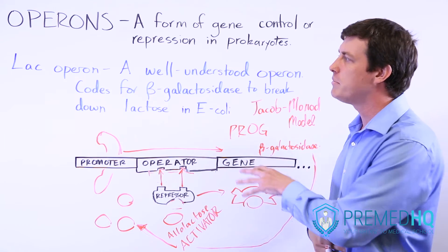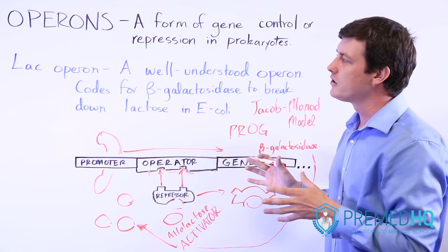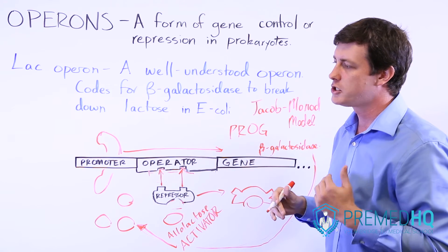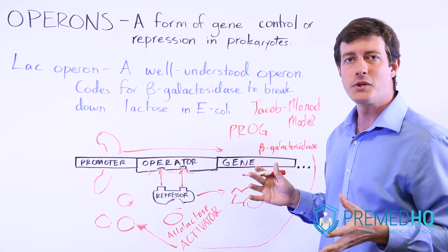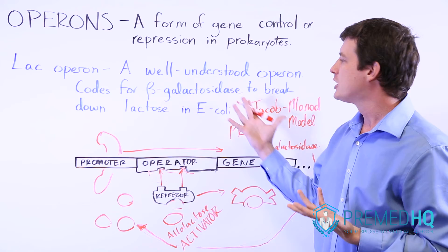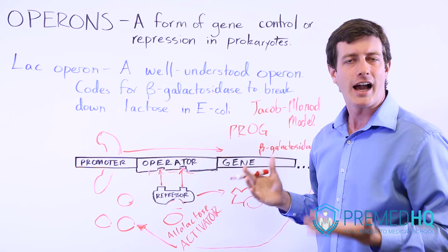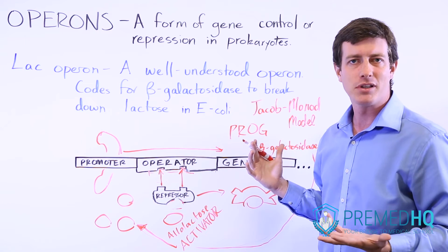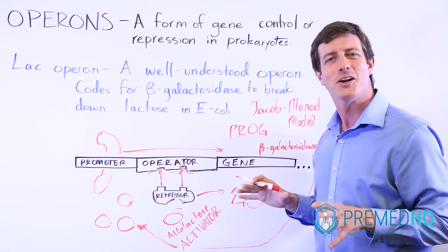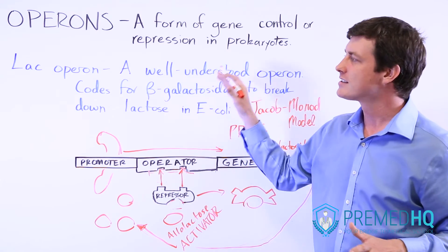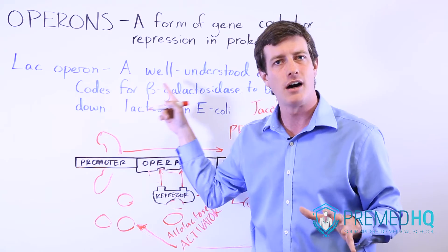One other thing that might be tested specifically with the lac operon is that it works best in situations where you don't have much glucose. If you do have a lot of glucose, E. coli probably won't need to rely on other carbohydrates like lactose for its energy supply. So even if there is a lot of lactose, if there's glucose around, it doesn't matter as much. This is specific to the lac operon, not a general operon feature.